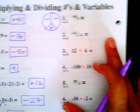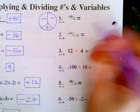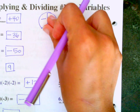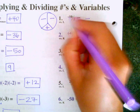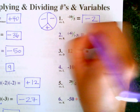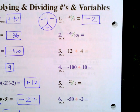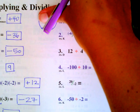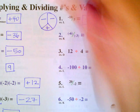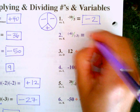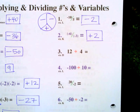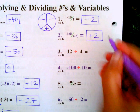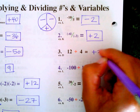Now let's look at some division problems. The same sign rules apply. Negative 10 divided by positive 5 is negative — 10 divided by 5 is 2, so negative 2. Negative 6 divided by negative 3: negative and negative makes positive — 6 divided by 3 is 2, so positive 2. Positive 12 divided by positive 4 is positive 3. Negative 100 divided by positive 10: negative and positive makes negative — 100 divided by 10 is 10, so negative 10.